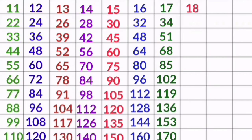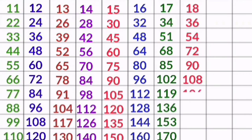18 1s are 18, 18 2s are 36, 18 3s are 54, 18 4s are 72, 18 5s are 90, 18 6s are 108, 18 7s are 126, 18 8s are 144, 18 9s are 162, 18 10s are 180.